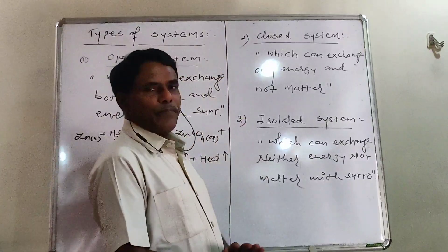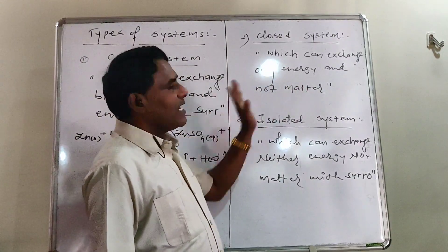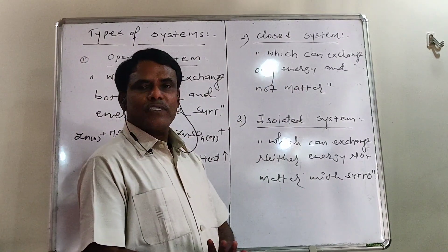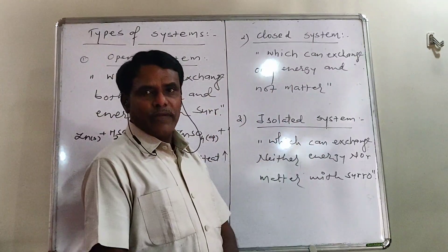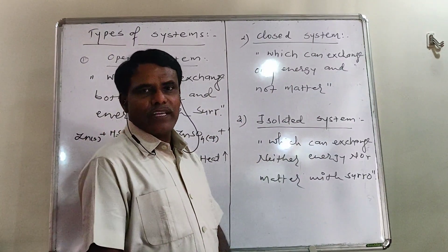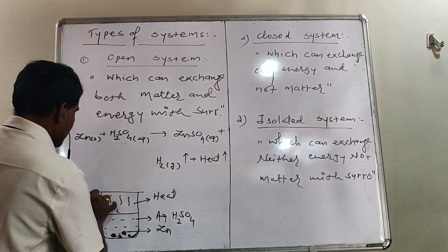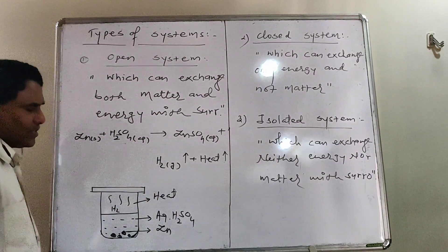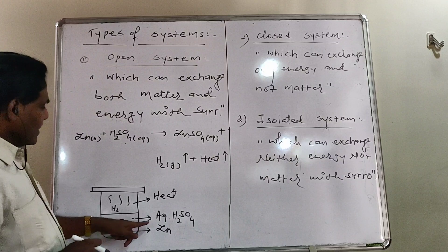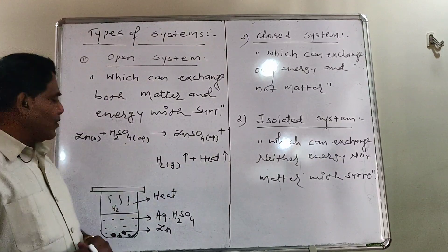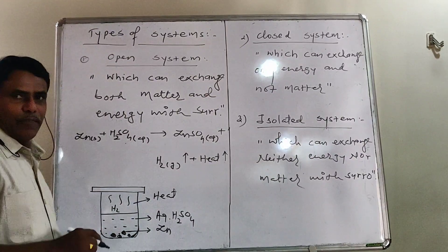Second: Closed system. It is such a system which can exchange only energy and not matter with the surrounding. If the same reaction between zinc metal and dilute sulfuric acid is carried out in a closed vessel, only energy exchange occurs with the surrounding, but matter is not exchanged — making it a closed system.